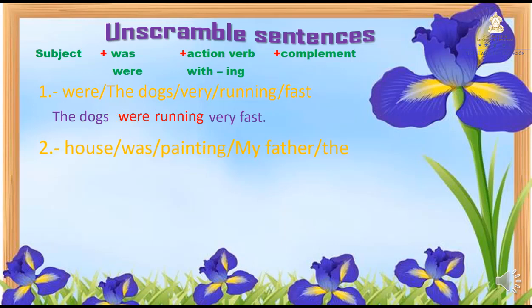Number two. Busquemos el sujeto: my father. Ahora el verbo to be en pasado: was. Ahora sigue el verbo con -ing: painting. Y nos quedan dos palabras para el complemento: house y the. ¿Cuál es el orden? The house. My father was painting the house. Mi papá estaba pintando la casa.